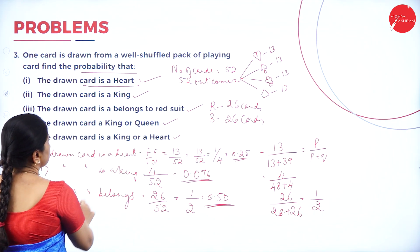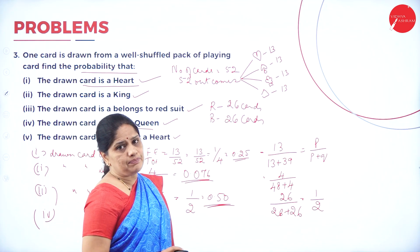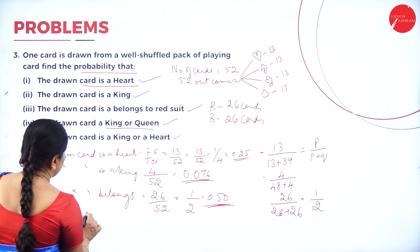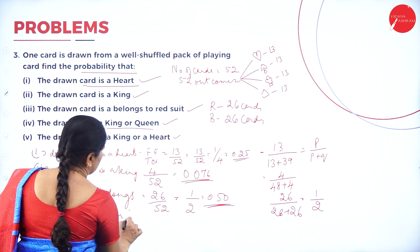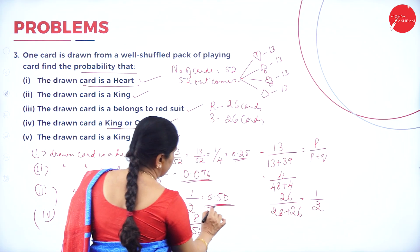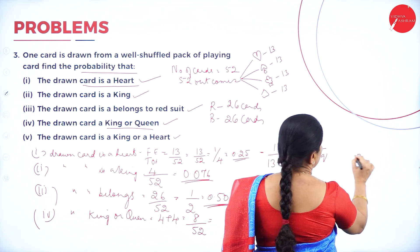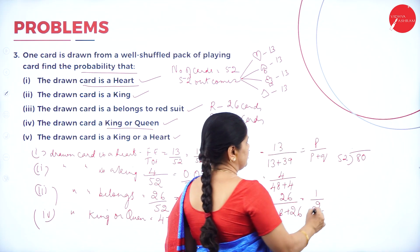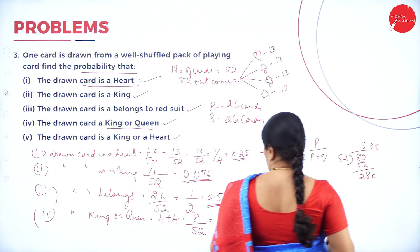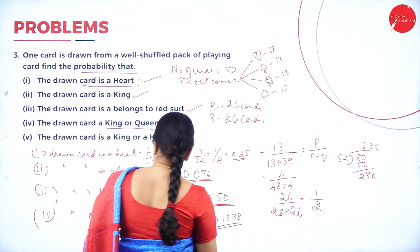Fourth: the drawn card is a king or a queen. Whenever they say it is a king or a queen, we have to add. How many kings are there? 4 kings. How many queens are there? 4 queens. So the drawn card is king or queen: 4 plus 4 equals 8, divided by 52. When I simplify 8/52, I get the answer 0.1538.